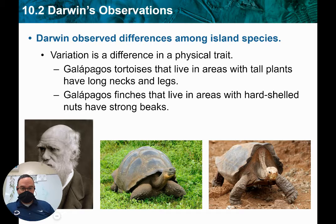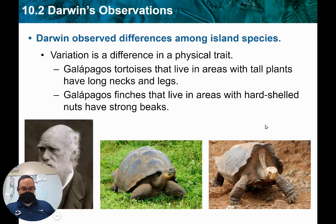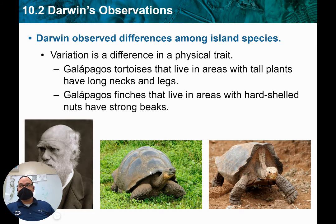Look at these two tortoises. This tortoise has longer legs, and you see how, since its shell goes up, it can get its neck up higher? This tortoise could eat taller leaves than the other one. The other has shorter legs, and there's a shell in the way. So this tortoise adapted to a different environment.